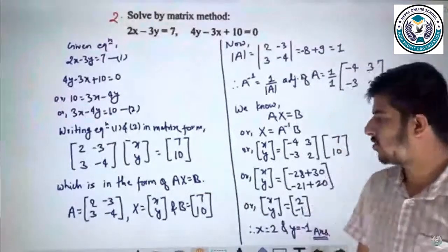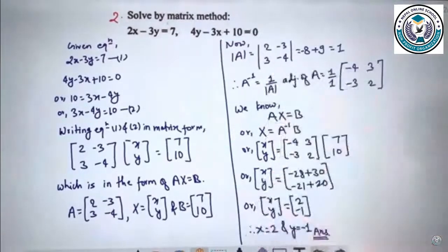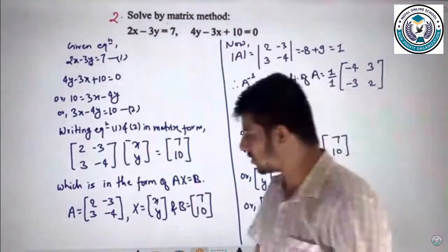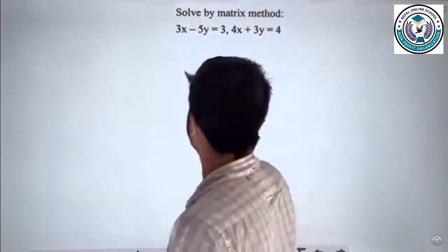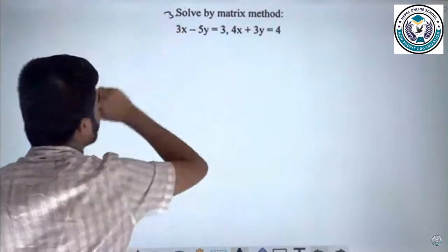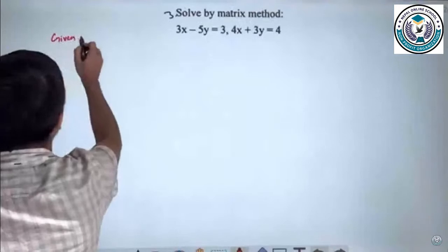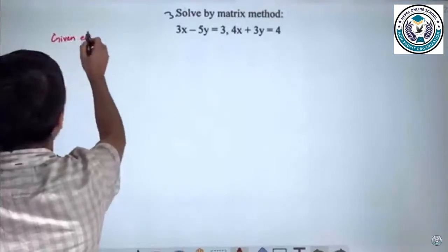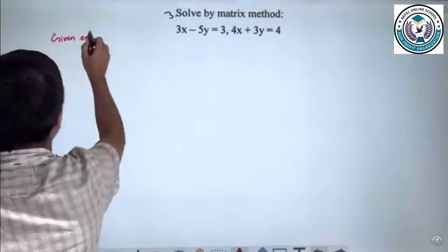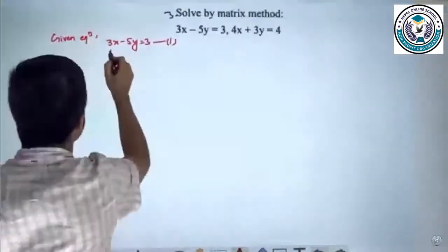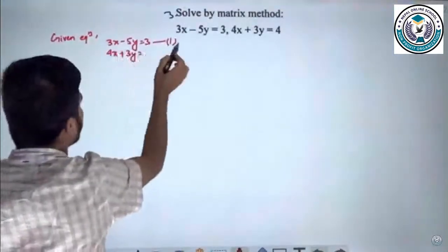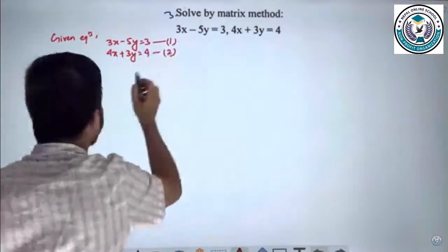This was a screenshot of the question — question number three: solve by matrix method. We have the same equation. Next case: 4x plus 3y is equal to 4s, equation 2y. So directly handling it in matrix format.